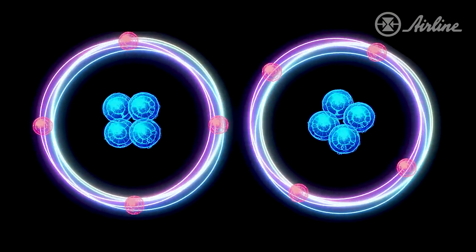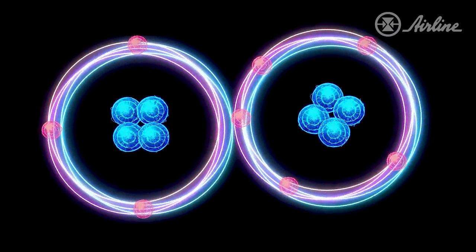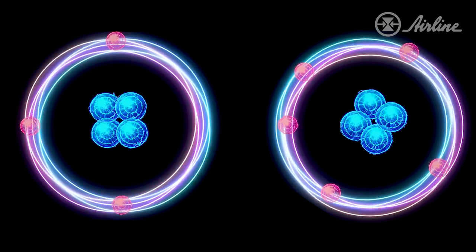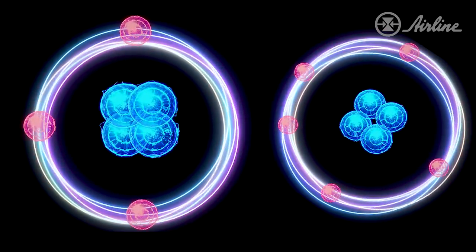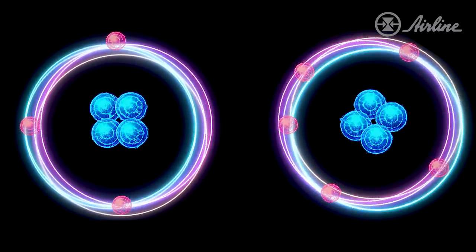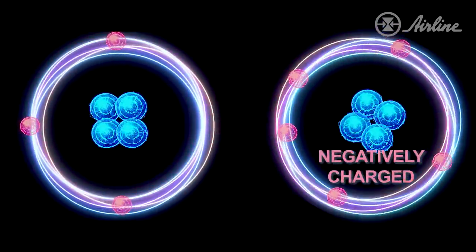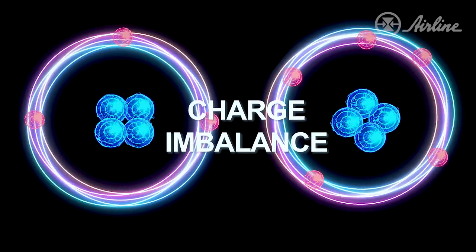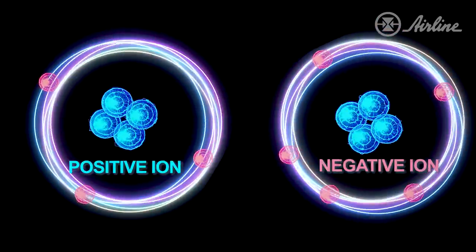But electrons are very small in mass, so friction can cause loosely bound electrons to leave their atoms and attach to other surfaces. When this happens, the first object is left with more protons than electrons and becomes positively charged, while the surface that now has more electrons than protons becomes negatively charged. This phenomenon is called charge imbalance, and the molecules with unbalanced charges are called ions.